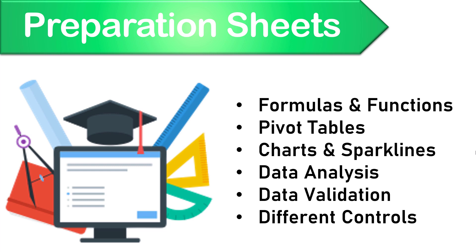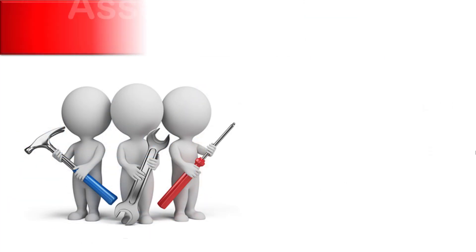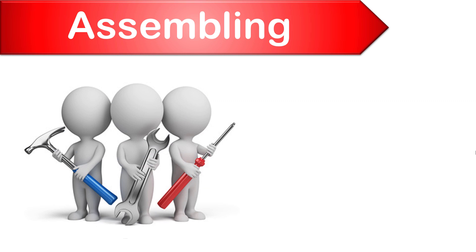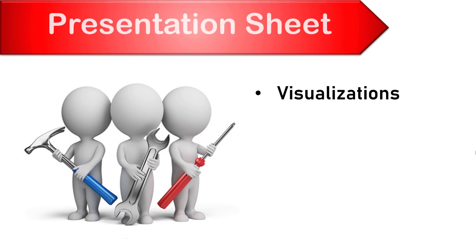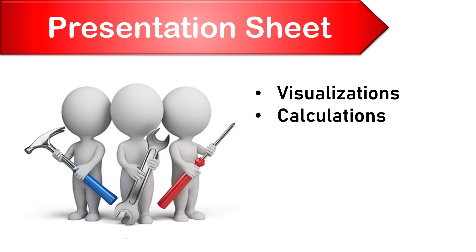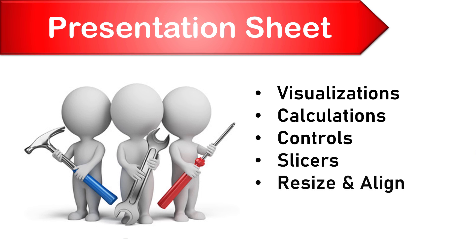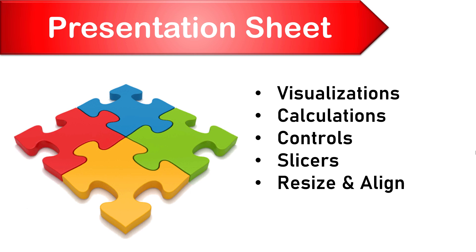When you buy a product from IKEA, it comes in parts or maybe multiple boxes. Before using that product, you need to bring these parts together — you need to assemble it. We then move to part three, in which we assemble the different elements of our dashboard: we copy the visualizations, create references to calculations, copy our controls and slicers, resize and align the different elements, and finally enhance the appearance.